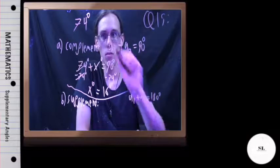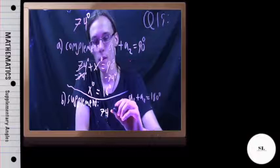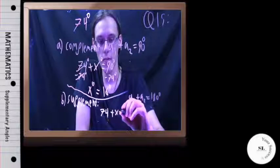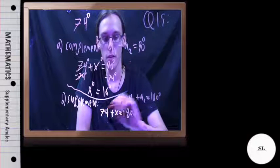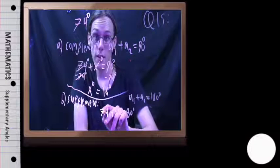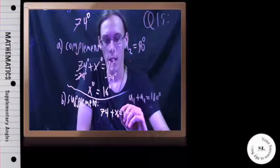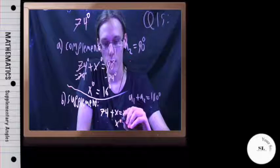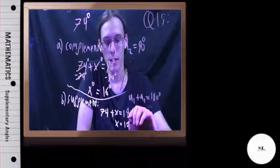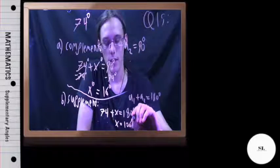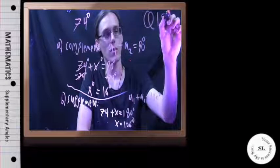Same idea: 74 plus some other angle has got to come up to be 180 degrees. Subtract 74 from both sides like we just did, and you should get that the angle you're looking for is going to be 106 degrees. And that is question 15.